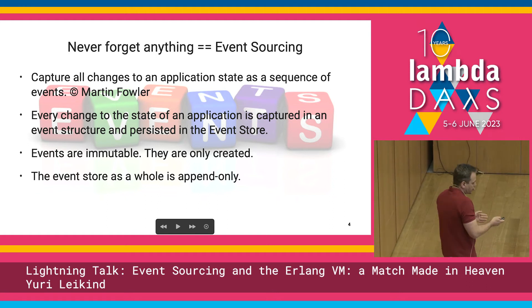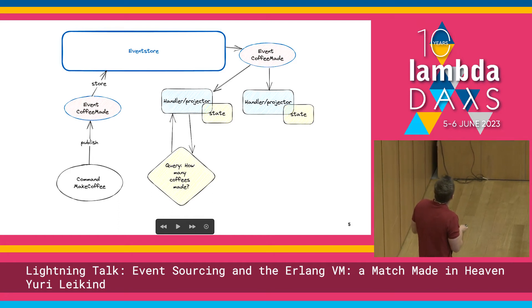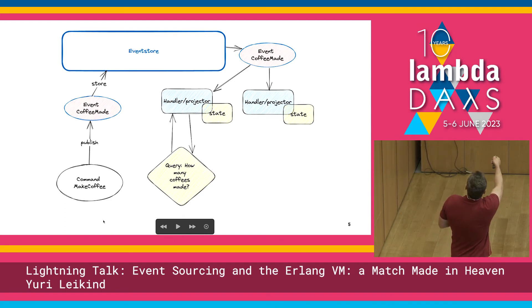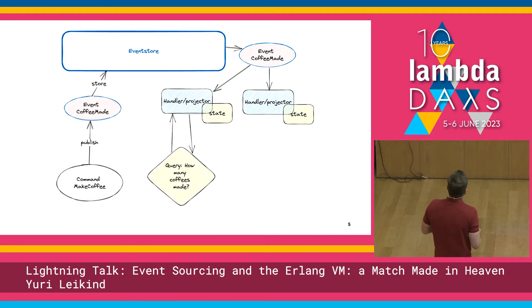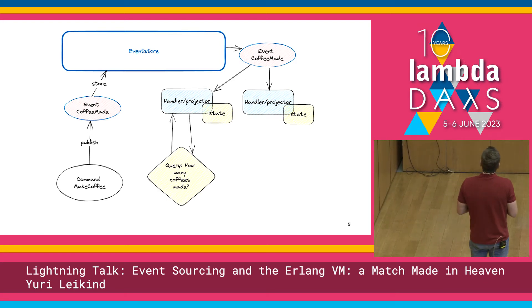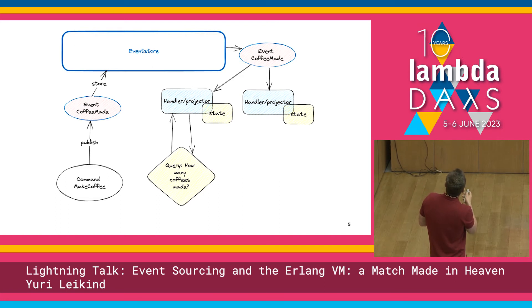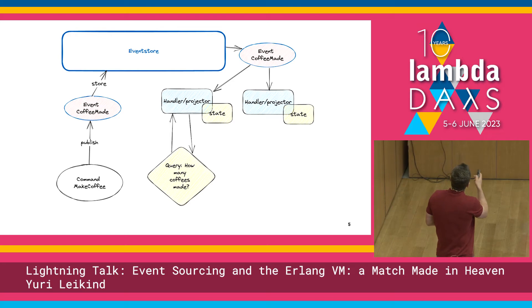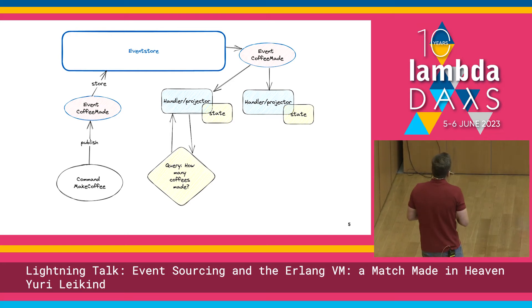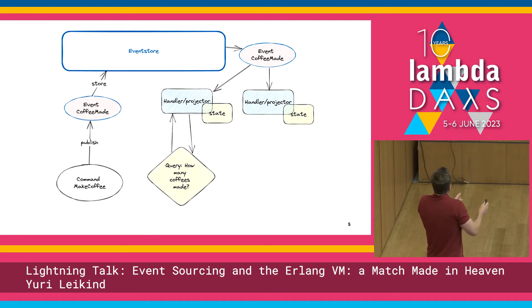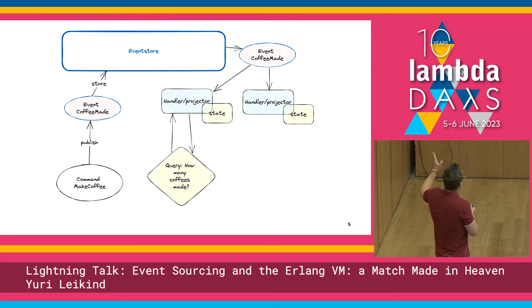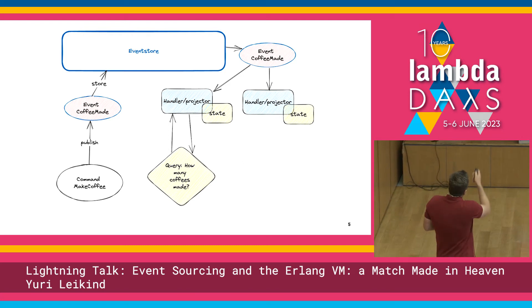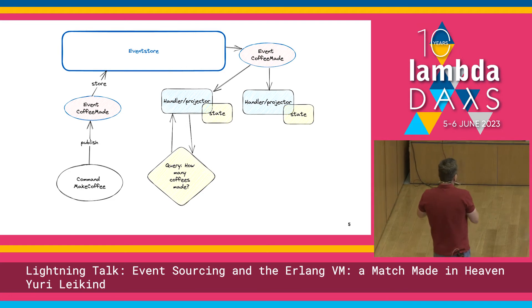We decided to use the Erlang VM and Elixir for this, and here is a very simplified — super simplified — diagram of an event sourcing application. We have a command, which is an intent to perform some kind of change. It is validated against the state of the application and an event is published. The event here is 'coffee made.' This event is appended to the event store. There are entities subscribed to events of certain types — I call them handlers or projectors — and each one has a state, which is essentially a reduction of all the events that the handler listens to. We also have queries, which are a way to query those states. Those states can be anything: in-memory state, a database table, or anything you want.